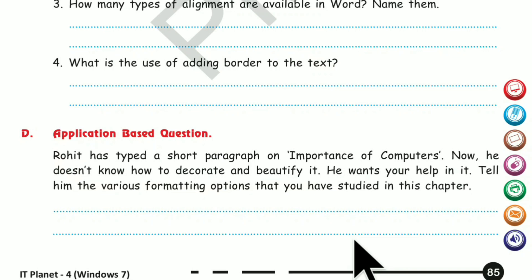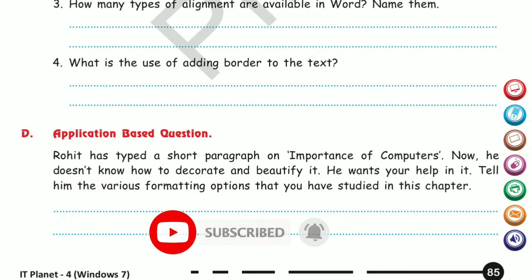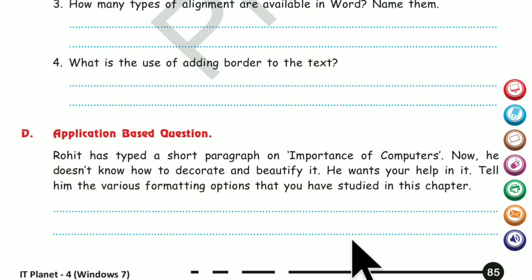The formatting options are: changing the size of the text, changing the text style like bold, italics, or underline, changing the color of the text, highlighting the text, changing the alignment — align right, left, center, or justify — inserting pictures and clip art, and adding a border to the paragraph. So many options are there to decorate a paragraph.